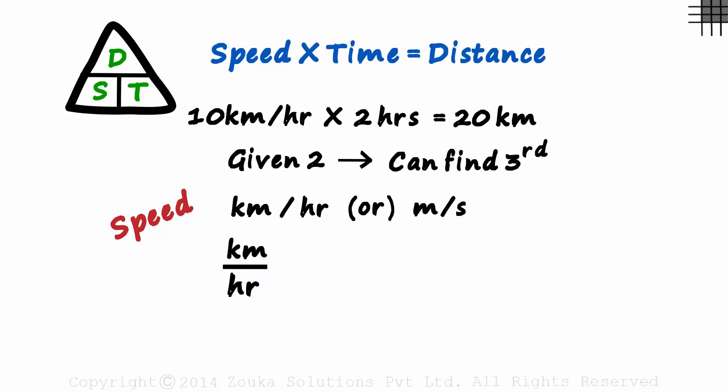If we multiply the value in kilometers per hour by 5 over 18, we will get the answer in meters per second. Yes, that's how easy it is. Let's see why.